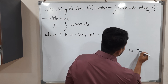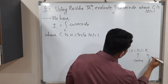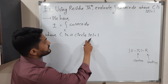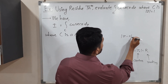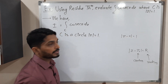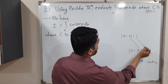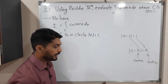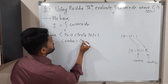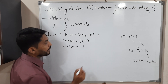The standard form of a circle is |z − z₀| = r, where z₀ is the center and r is the radius. We have |z| = 1, which means |z − 0| = 1. Comparing, we get z₀ = 0 and r = 1. So the center is (0, 0) and the radius is 1.